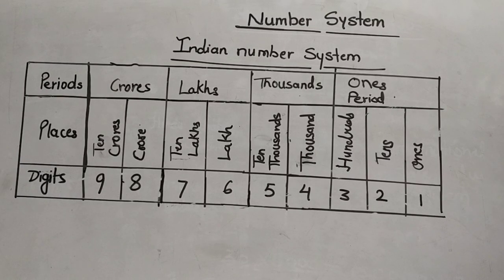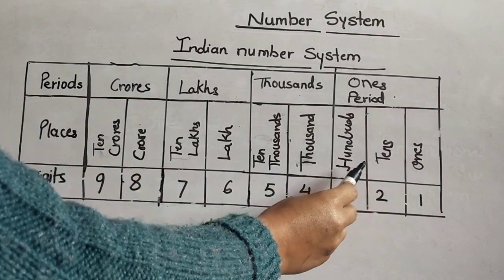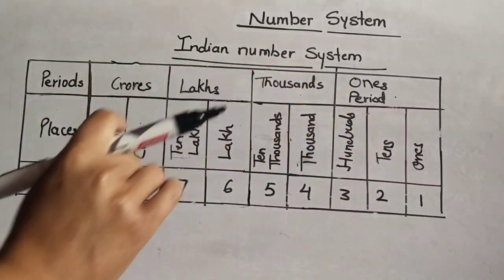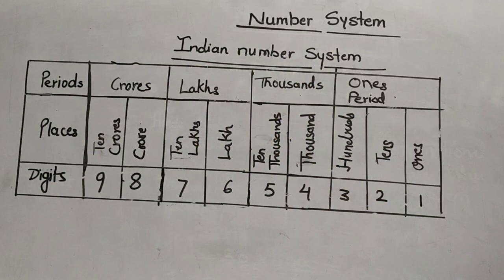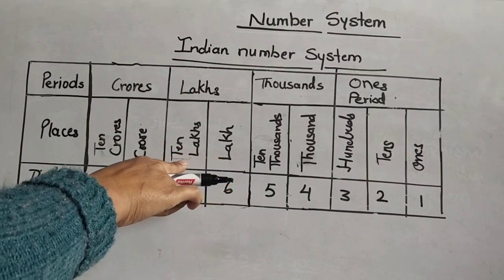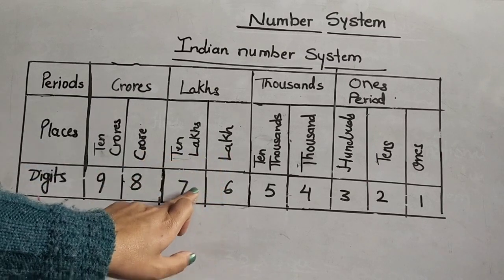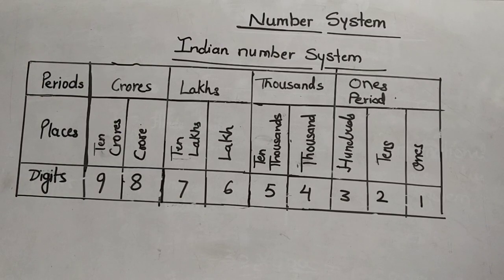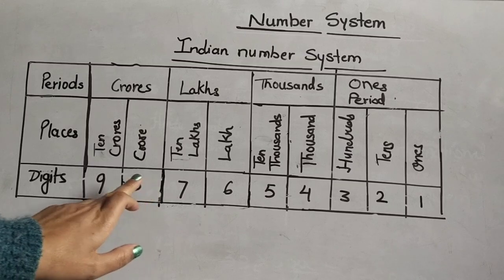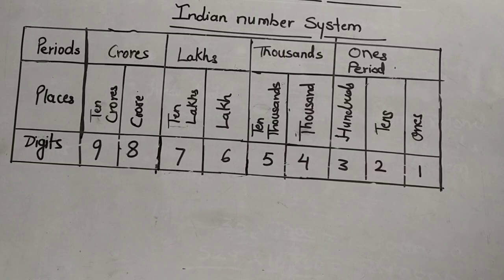According to the Indian place value system, the ones period consists of the ones, tens, and hundreds places — meaning the first, second, and third digits. The thousands period comprises two places: thousands and ten thousands, meaning the fourth and fifth digits. The lakhs period comprises two places: lakhs and ten lakhs, meaning the sixth and seventh digits. The crores period also has two places: crore and ten crore, meaning the eighth and ninth digits.